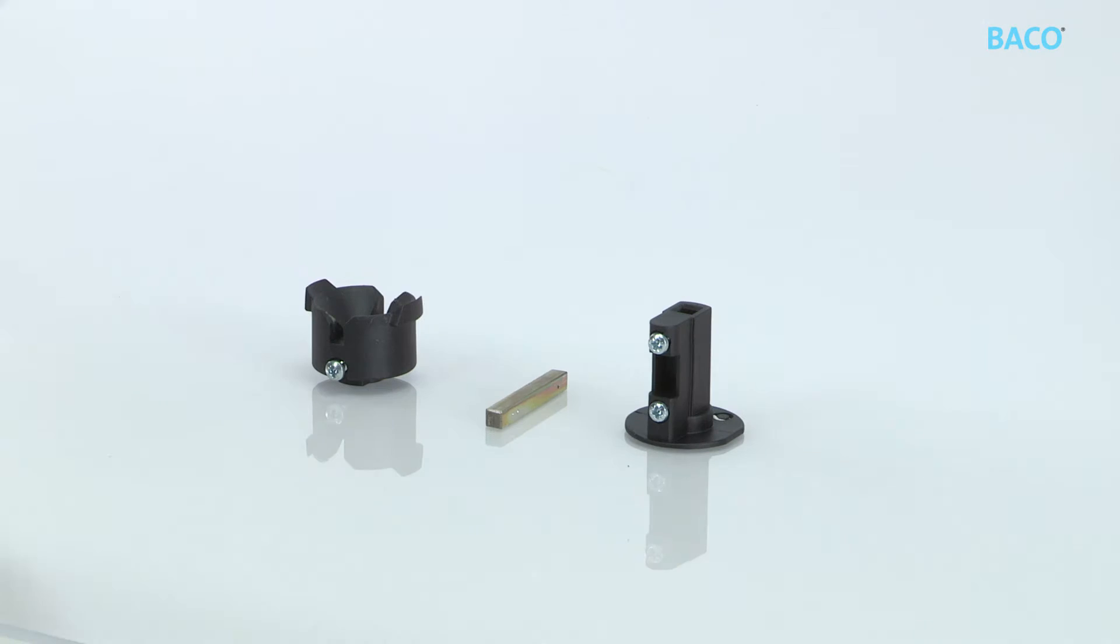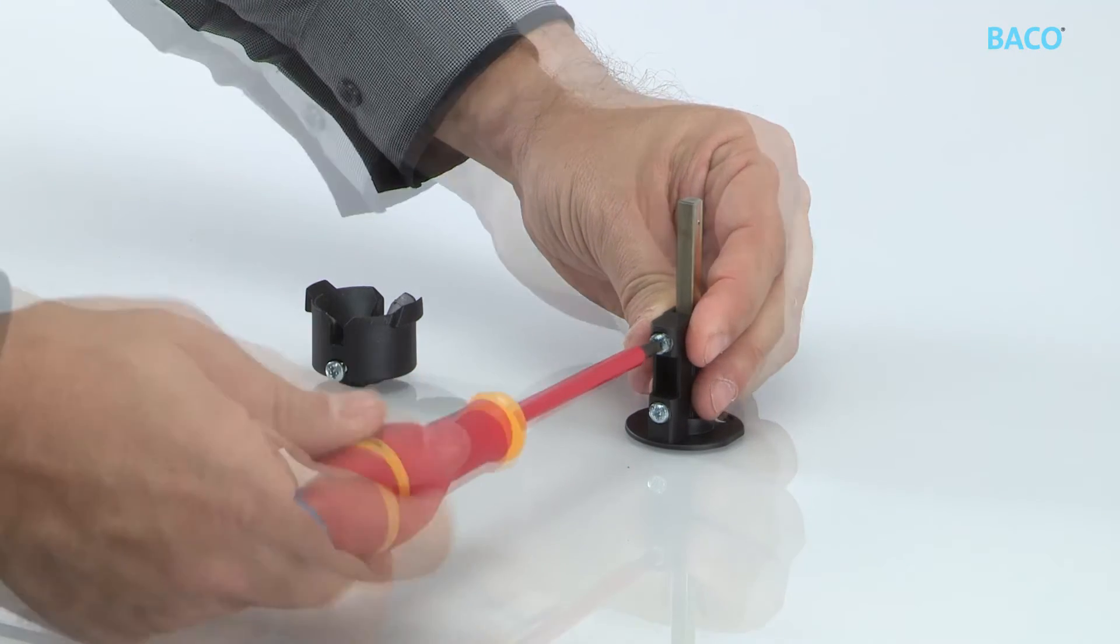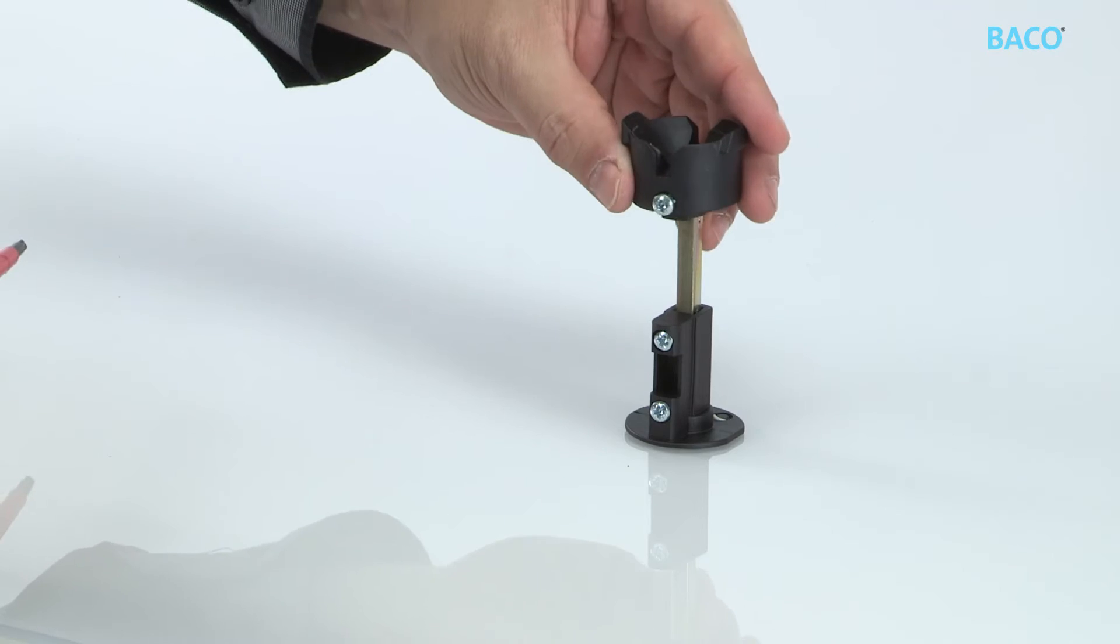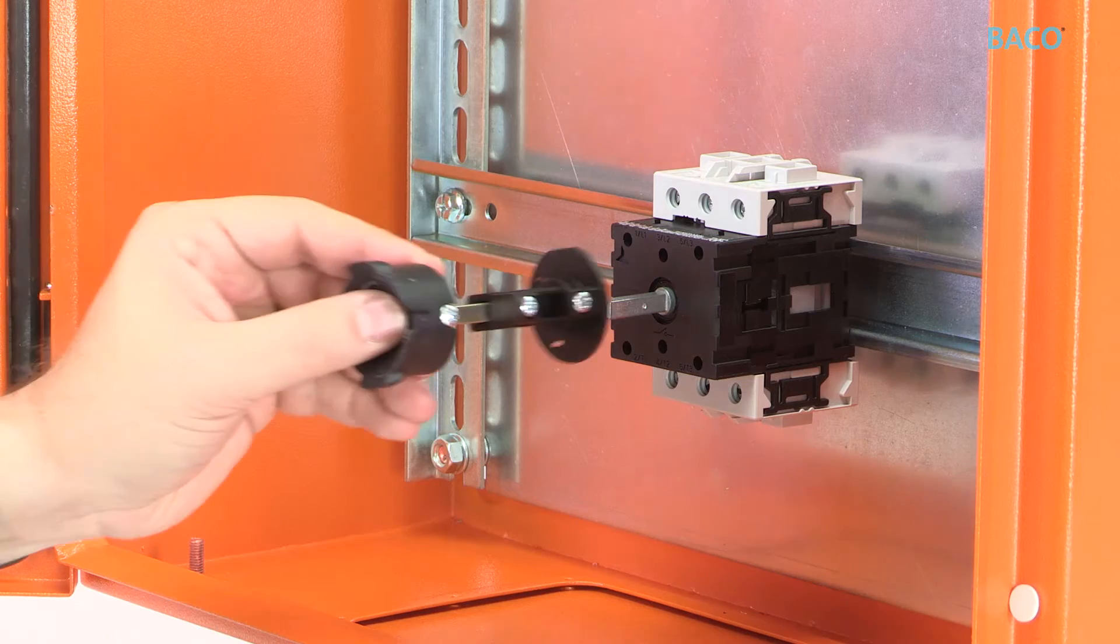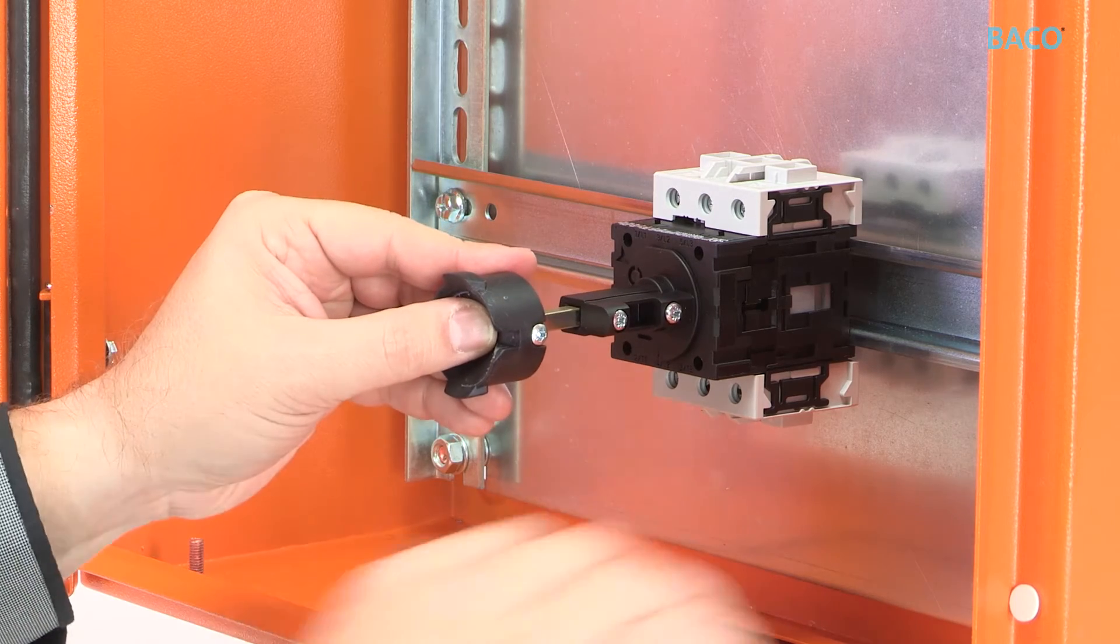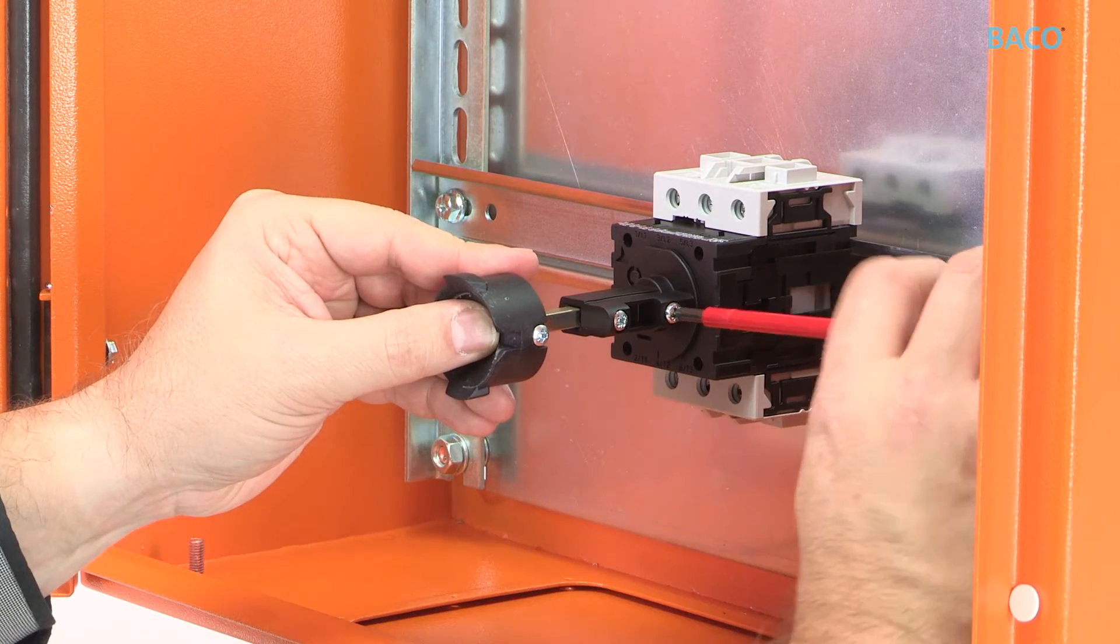BACCO disconnect switches offer a door interlocked external handle for its safety features. Metal cuttable shafts, with or without door interlock system. Short or long metal shaft available.